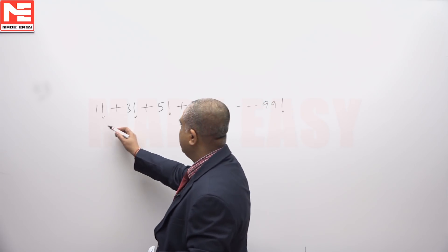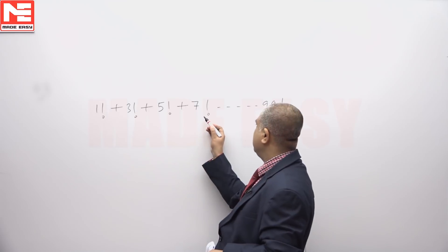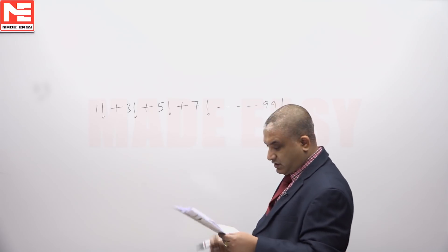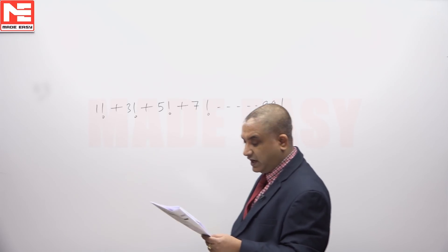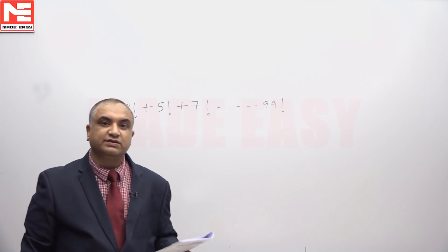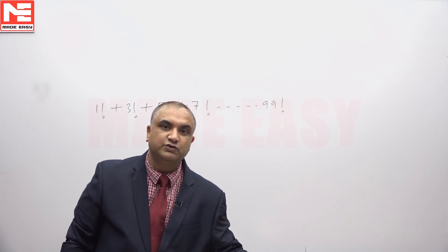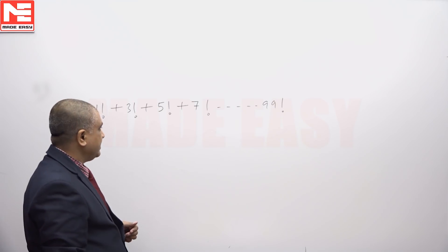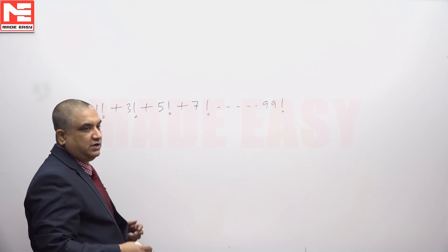We have n defined as the sum of factorials of odd numbers — factorial 1 plus factorial 3 plus factorial 5 plus factorial 7, up to factorial 99. We need to find the remainder when n is divided by 24.